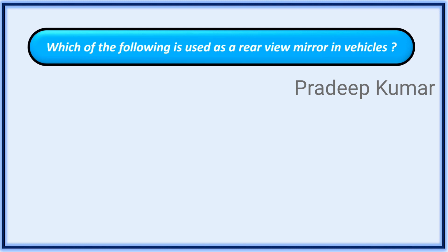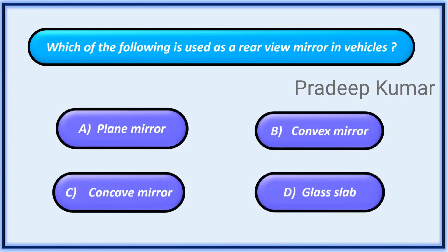Which of the following is used as a rear view mirror in vehicles? Options: A. Plane mirror, B. Convex mirror, C. Concave mirror, D. Glass slab.